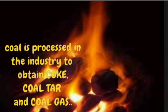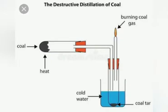Which is the process of coal in the industries? We call it destructive distillation. It is done by heating coal.